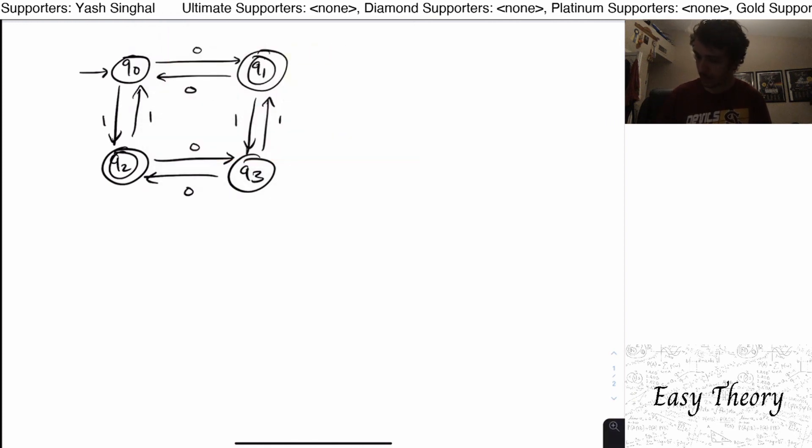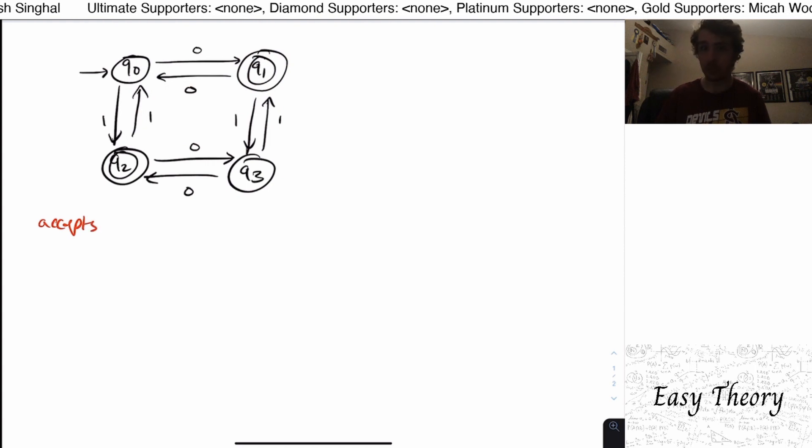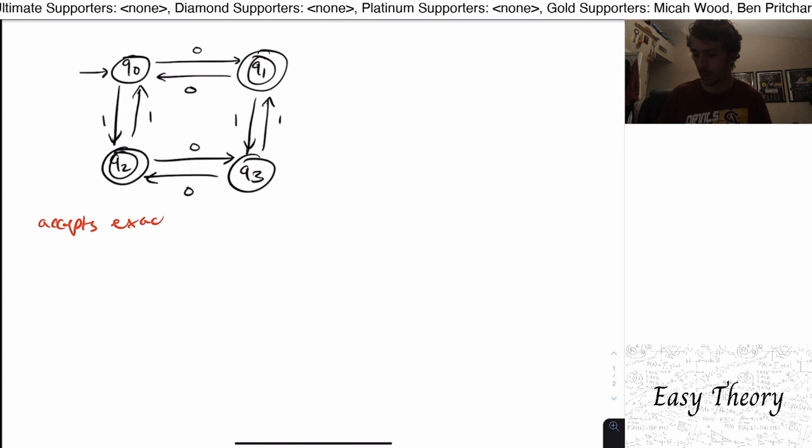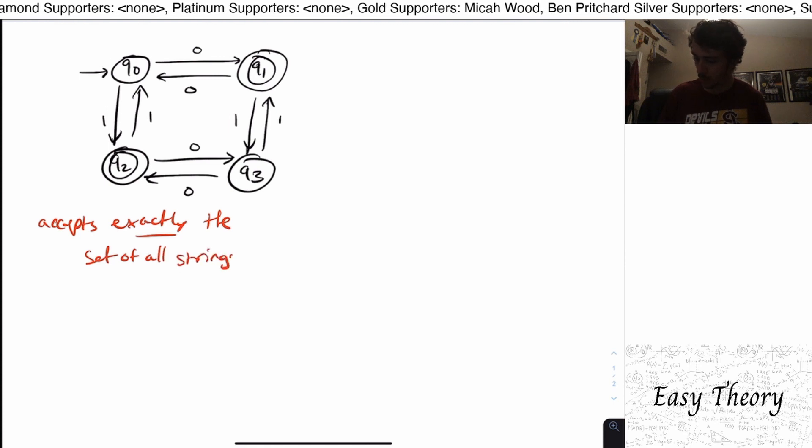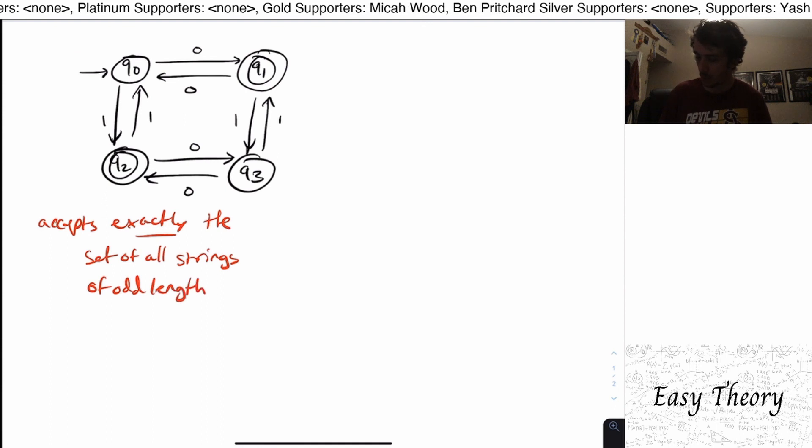So we can say that this machine accepts not only the strings of odd length but exactly the strings of odd length. And why can we say this? So the set of all strings of odd length. Why can we say this?